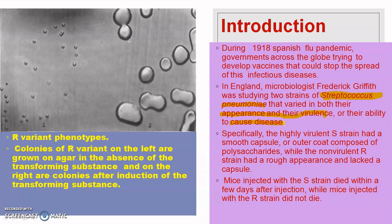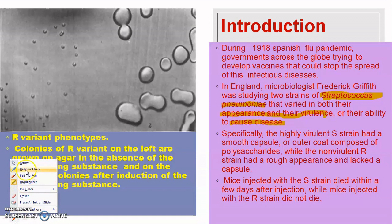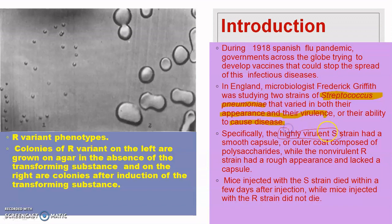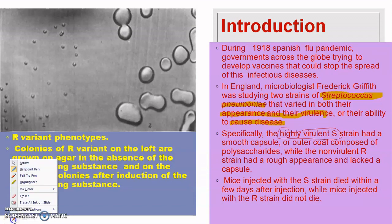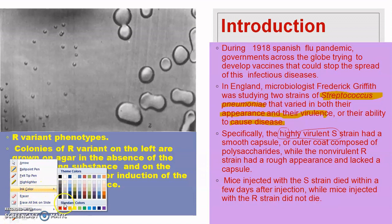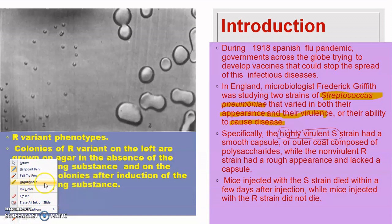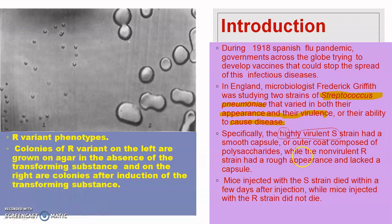The highly pathogenic or virulent strain is called the S strain, where S stands for smooth. When grown on a nutrient agar medium, these strains produce smooth colonies. The S strains have a polysaccharide covering or polysaccharide capsule, which is why these bacteria are pathogenic in nature.